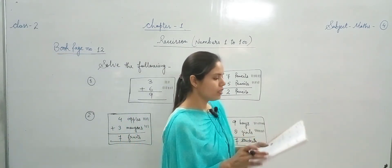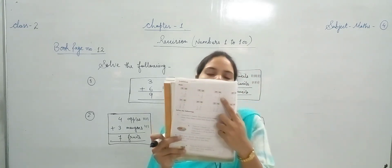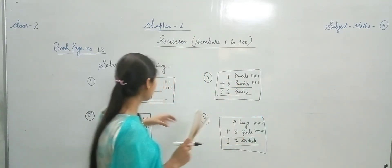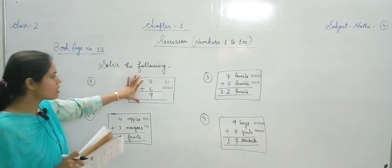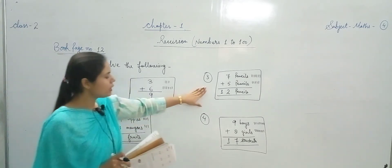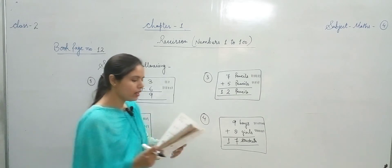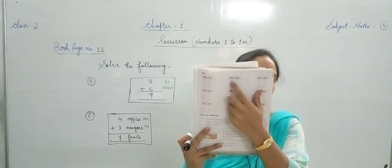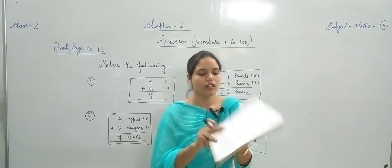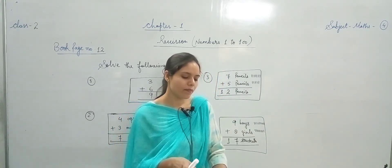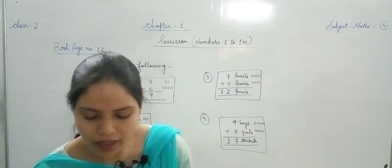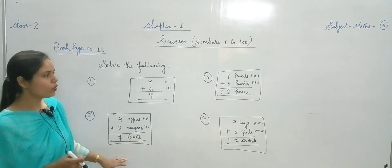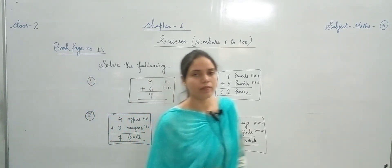यह आपका book page number 12 था — हमने इसमें simple addition किया है। और simple addition वाली word problems — problem 1, 2, 3, and 4 clear की हैं। Next class में page number 13 पे 2-digit का addition बताऊंगी — Ones और Tens दोनों boxes में numbers हों तो कैसे add करेंगे। वीडियो को carefully देखें और अपने questions को understand करें। Thank you and enjoy your class.